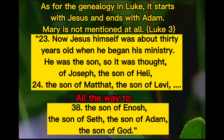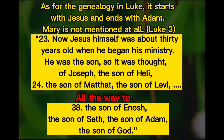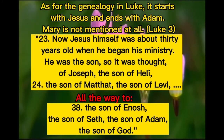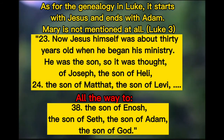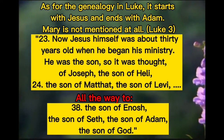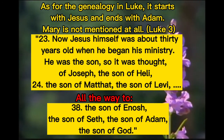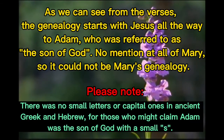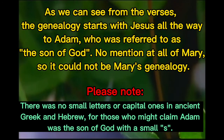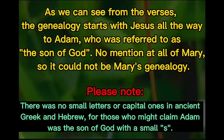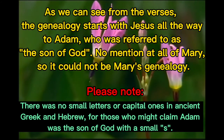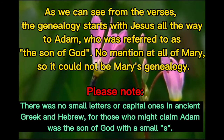Luke reads: 'Now Jesus himself was about 30 years old when he began his ministry. He was the son, so it was thought, of Joseph, the son of Heli, the son of Mattat, the son of Levi,' all the way to 'the son of Enosh, the son of Seth, the son of Adam, the son of God.' As we can see from the verses, the genealogy starts with Jesus all the way to Adam, who was referred to as the son of God. There is no mention at all of Mary, so it could not be Mary's genealogy.